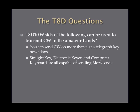Which of the following can be used to transmit CW in the amateur bands? It used to be that all you had was a telegraph key, but nowadays you have straight keys, electronic keyers, and computers that can all send Morse code. Technically, you don't have to know Morse code to send it, because a computer program can do it for you. All these forms are capable of sending Morse code, and by coincidence they are all possible answers — making this another all-of-the-above question.